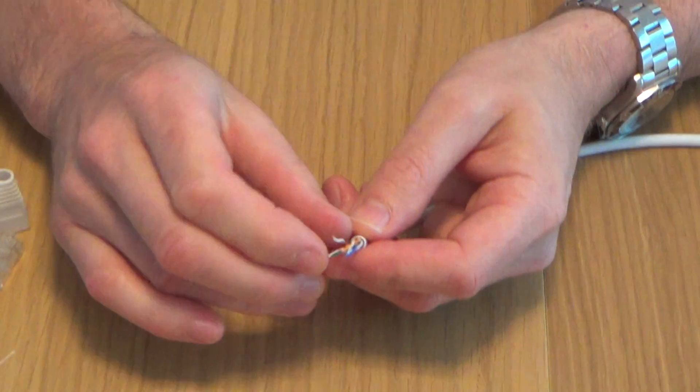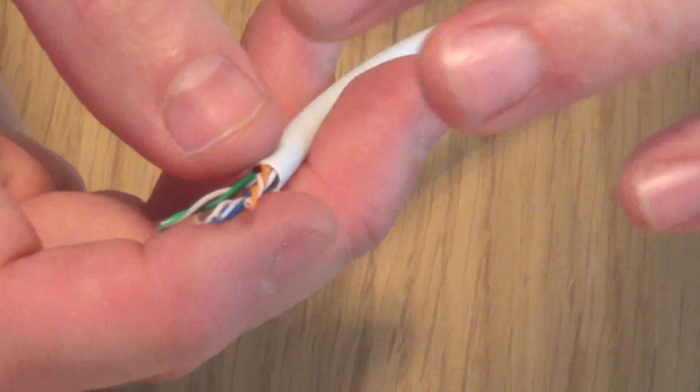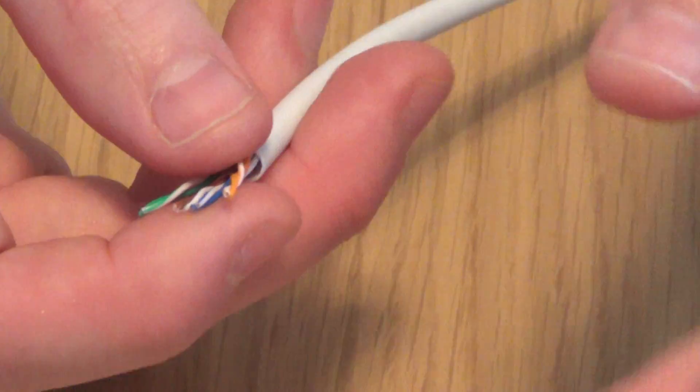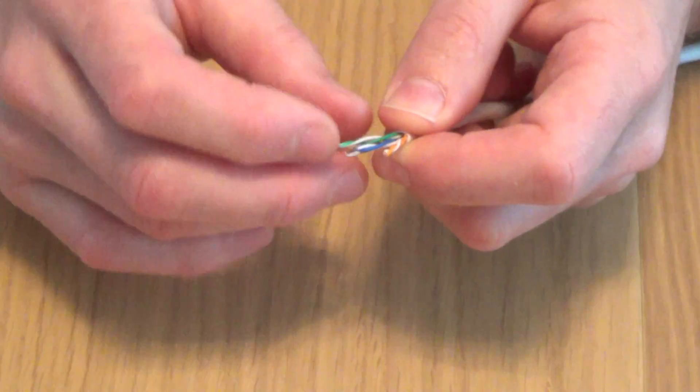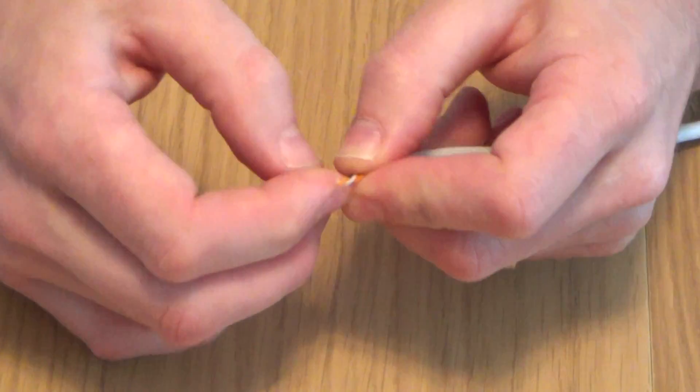Right now there's two types of colour diagrams, there's the 568A and the 568B and as long as you do the same on both ends, so if you're doing a straight cable, as long as you do A to A or B to B, it doesn't actually matter. But I always use B because nowadays all the patch cables you buy, they tend to be wired in the B configuration.